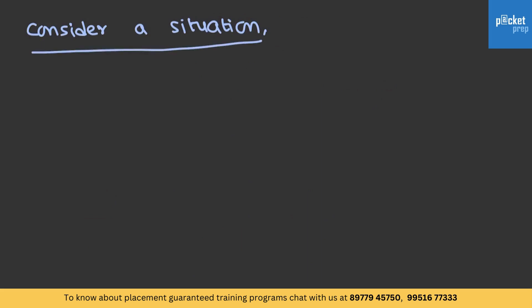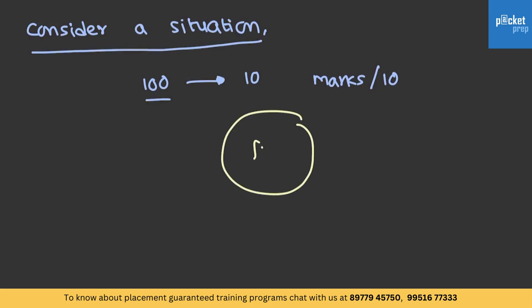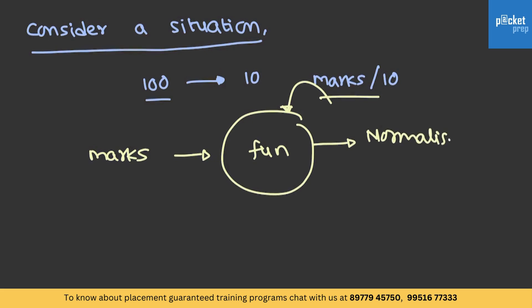Consider a situation: you are holding a test and you have taken marks out of 100. Now you have to normalize it to 10, so you have to divide the marks by 10. If we observe here, we can define a function which takes the input of marks, performs this task, and gives the normalized score as output.